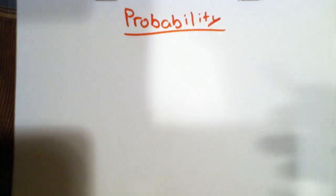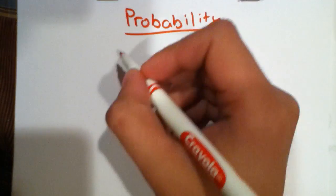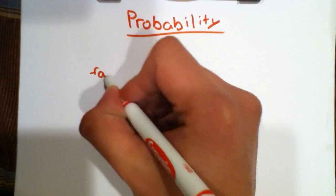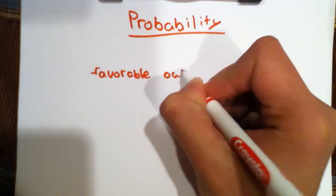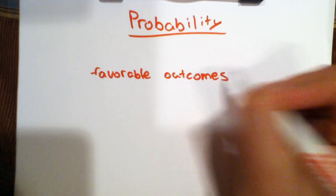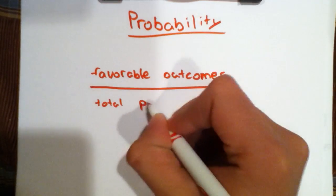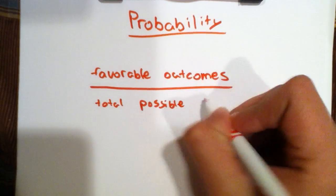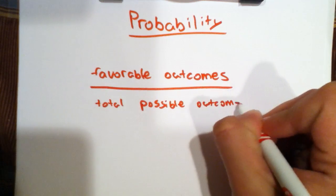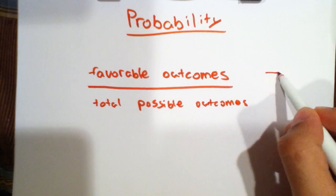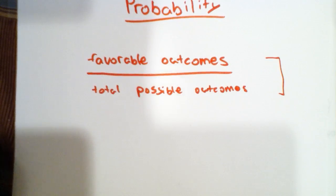So this would mean dividing, having the favorable outcomes on top of a fraction over the number of total possible outcomes. This is the basic formula for how simple probability is calculated.